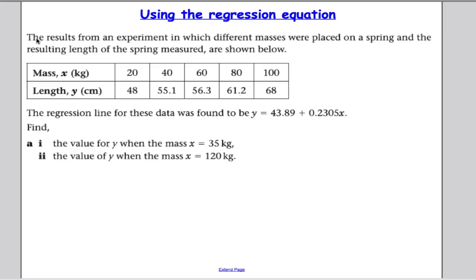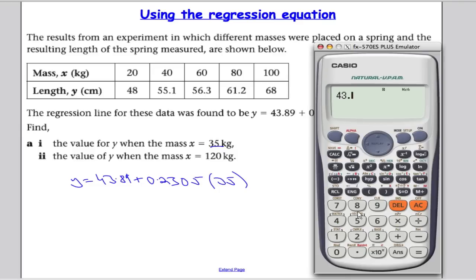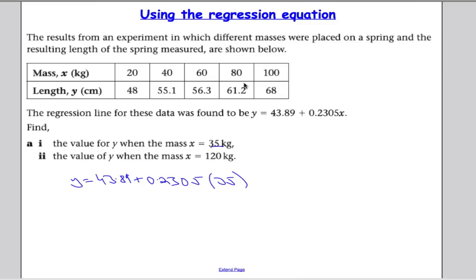So let's take a look at a quick example here. Suppose I have the results of an experiment. Different masses were placed in a spring and the resulting length of the spring was measured. So we have the regression line and we're asked to work out the value of y when the mass equals 35 grams. So it's fairly straightforward here. y equals 43.89 plus 0.2305 times by, now I'm just substituting 35 in for x. So we take out the calculator, 43.89 plus 0.2305 times 35 and we get 51.96.